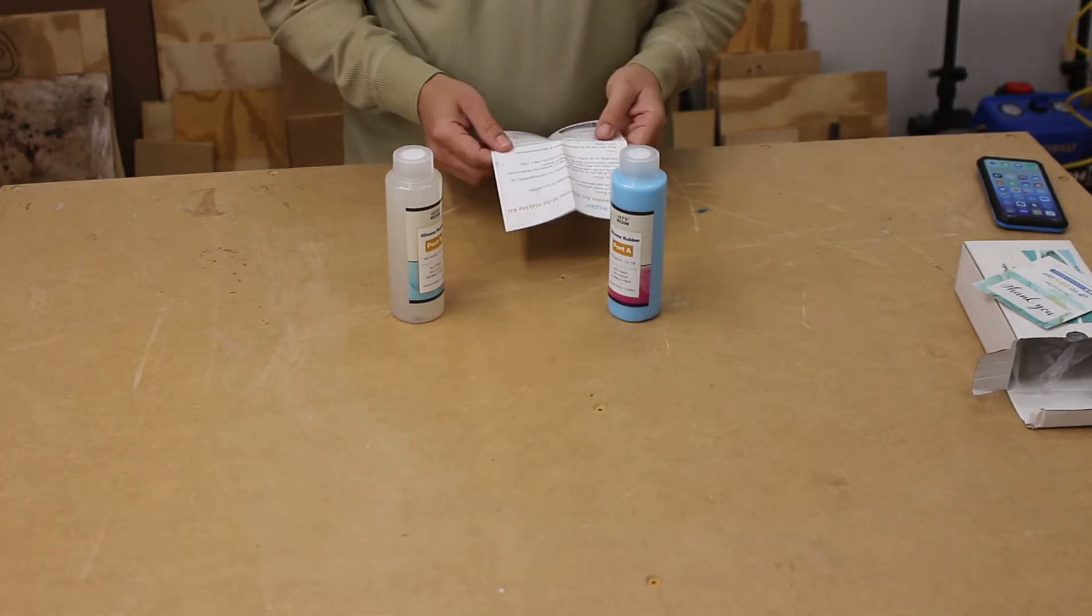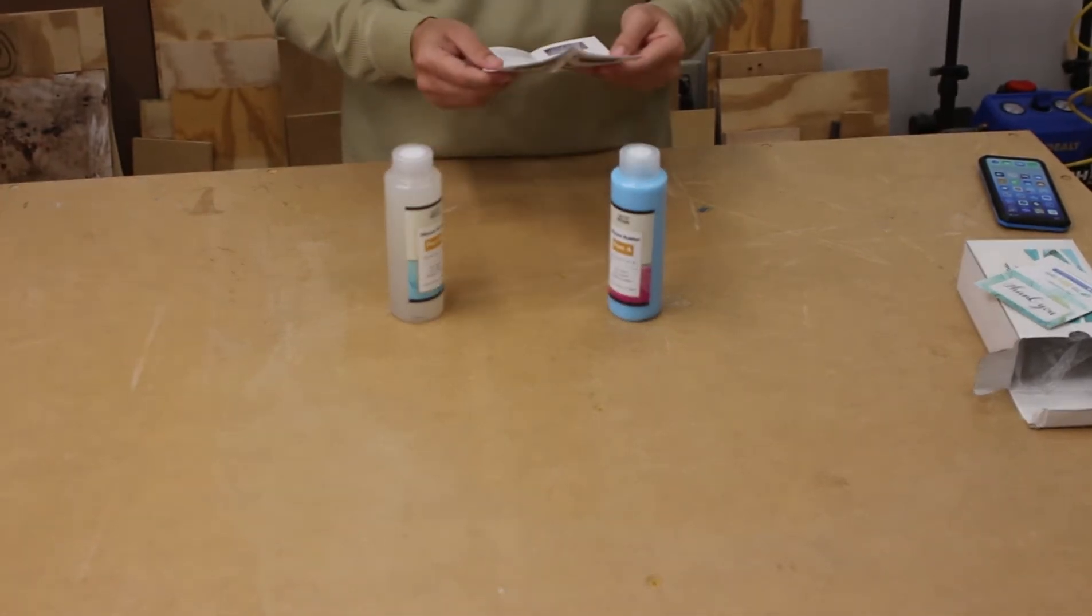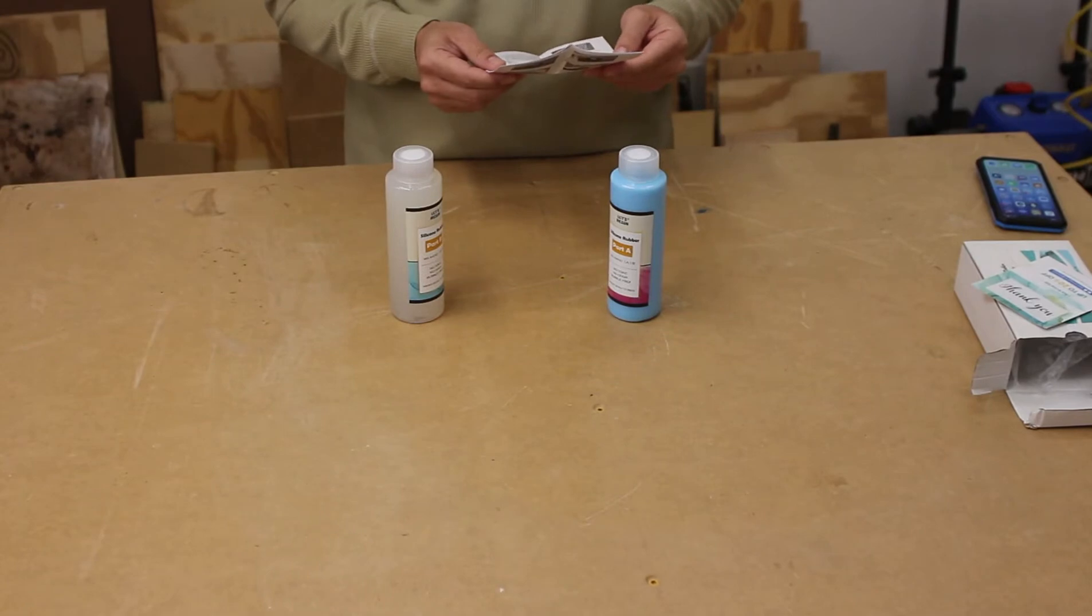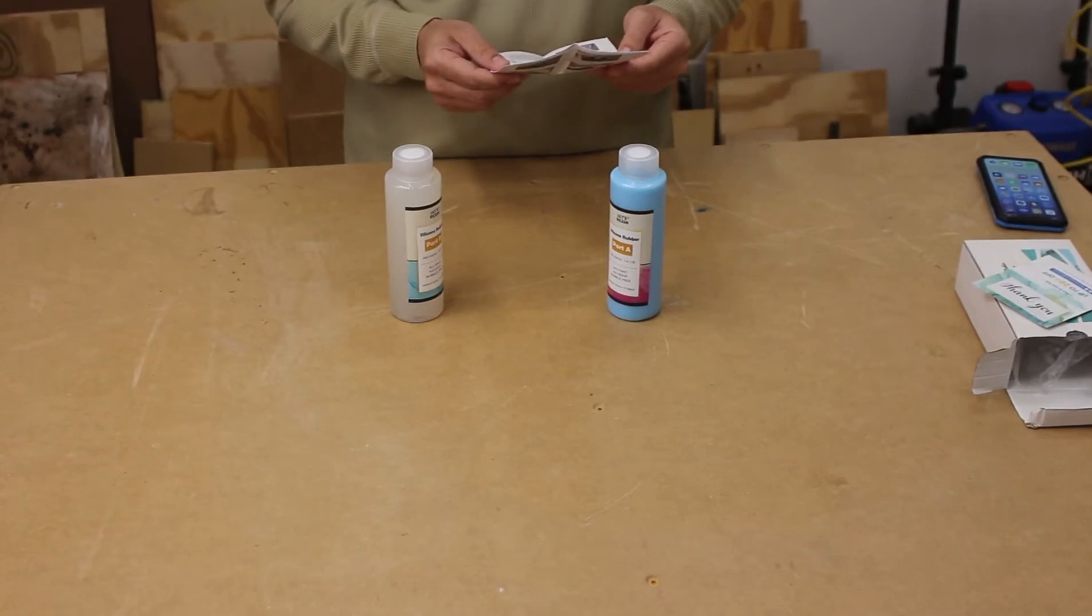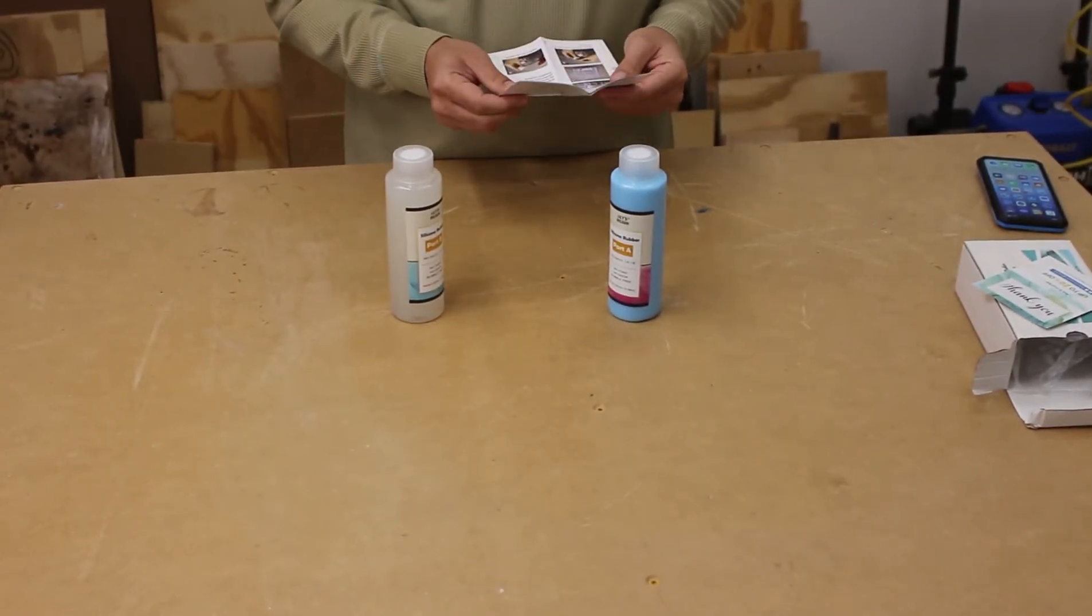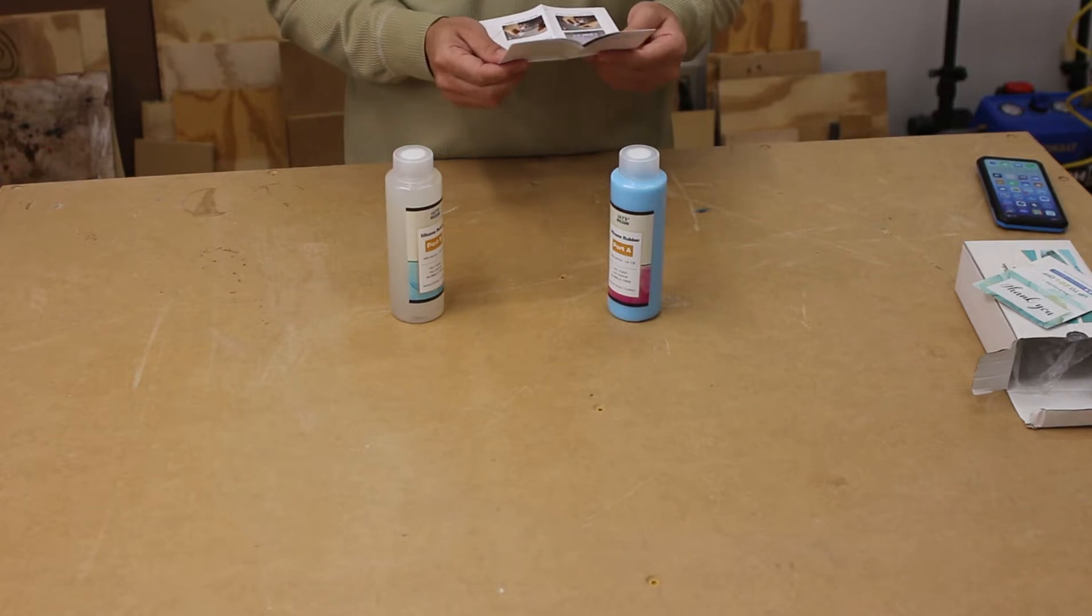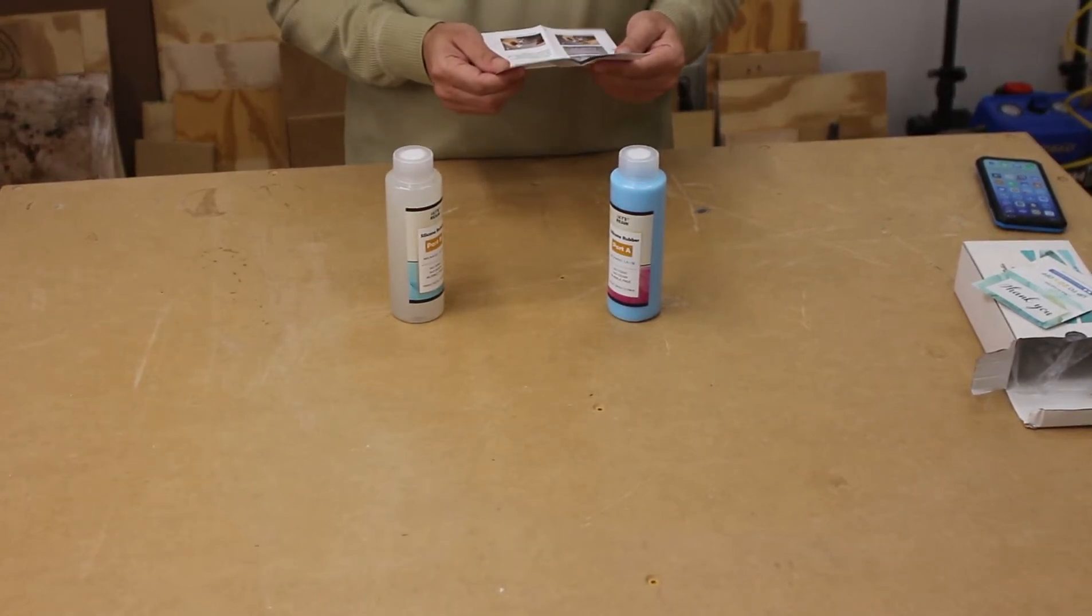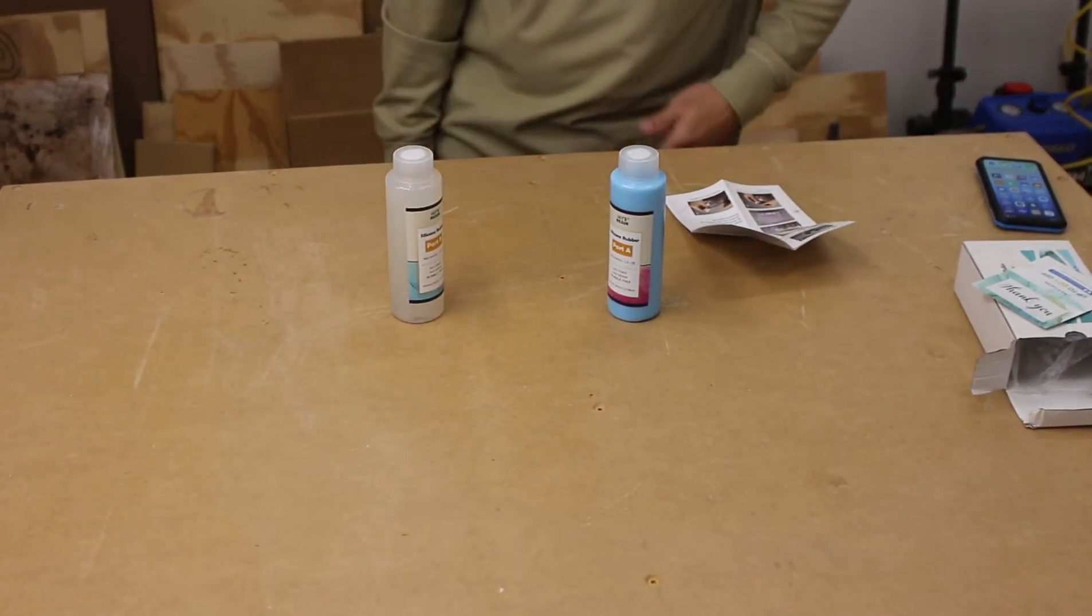24 to 48 hours cure time. Mix time in the cup prior to pouring is five minutes, and then you just kind of pour it. So I'm gonna actually pour the mold here. Let's see how it works.